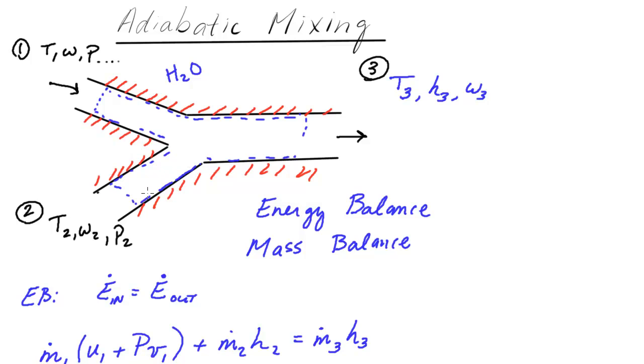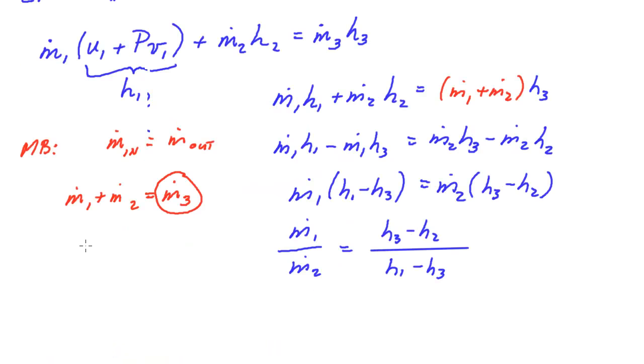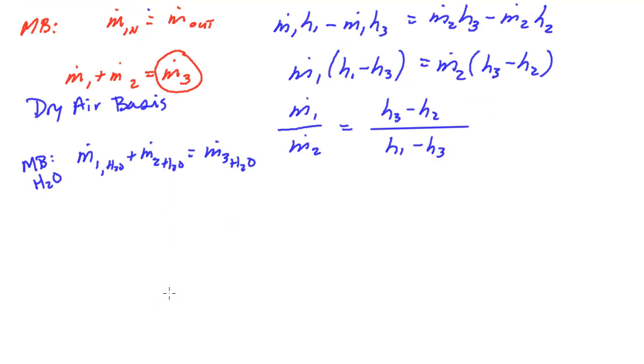But in HVAC a lot of times we also consider the moisture in the air or water vapor as a separate entity because it makes a very big difference in HVAC applications. So the other thing, we have this concept of dry air and moist air. This mass balance here was really on a dry air basis. But we also have a mass balance on the water vapor. So if I had the ṁ1 of H2O plus ṁ2 of H2O, that has to equal the amount of water vapor coming out in the third state.